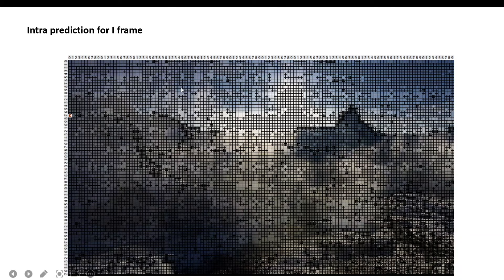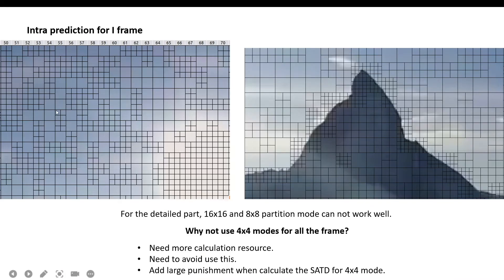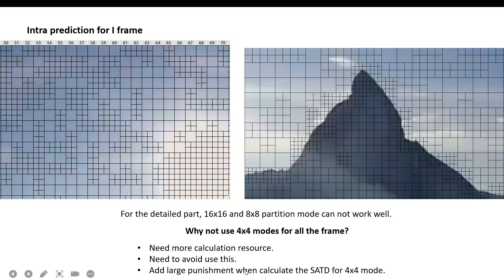In a real video example, the partition mode for smooth areas like the sky is 16x16 or 8x8. For detailed parts, 4x4 partition mode is used instead because 16x16 and 8x8 modes cannot represent the detail well. Why not always use 4x4 mode? Because it requires more computational resources. To avoid unnecessarily using small partition modes, a small punishment is added when calculating SATD for 8x8 mode, and a larger punishment is added for 4x4 mode.